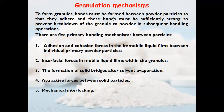Granulation mechanism — this is the most important part of the granulation process. To form granules, bonds must be formed between powder particles so that they adhere, and these bonds must be sufficiently strong to prevent breakdown of the granule to powder in subsequent handling operations. Five primary bonding mechanisms exist: adhesion and cohesion forces in immobile liquid films between individual primary powder particles; interfacial forces in mobile liquid films within the granules; formation of solid bridges after solvent evaporation during drying; attractive forces between solid particles; and mechanical interlocking.